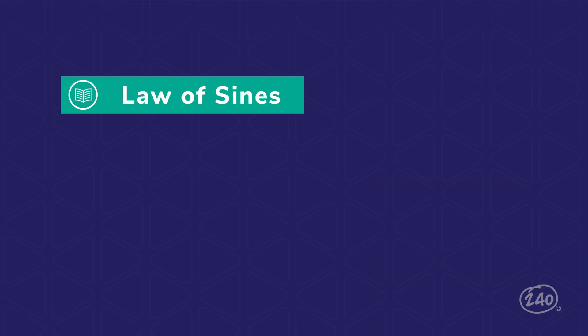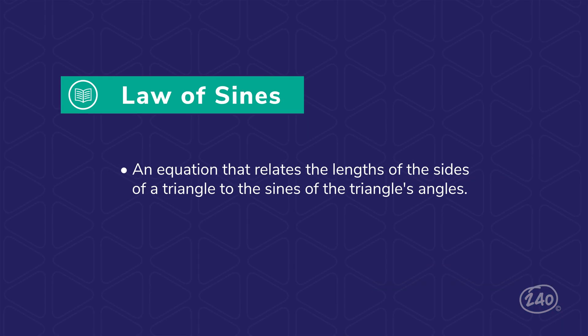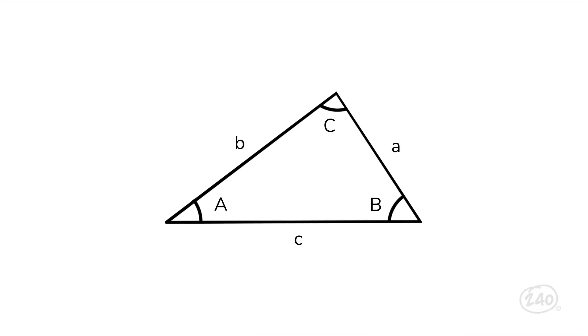The law of sines is an equation that relates the lengths of the side of a triangle to the sines of the triangle's angles. This law can be used for any triangle as long as a combination of three side lengths or angle measures are known. Take a look at the law of sines equation. That's one you should commit to memory. In these cases, lowercase a, b, and c are side lengths.